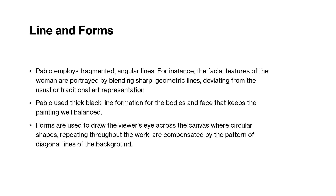The line informs Pablo employs fragmented, angular lines. For instance, the facial features of the woman are portrayed by blending sharp geometric lines, deviating from the usual or traditional art presentation. Pablo used thick black line formation for the bodies and face that keeps the painting well balanced. Forms are used to draw the viewer's eyes across the canvas with circular shapes repeating throughout the work, compensated by the pattern of diagonal lines of the background.